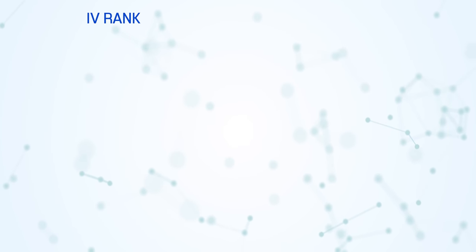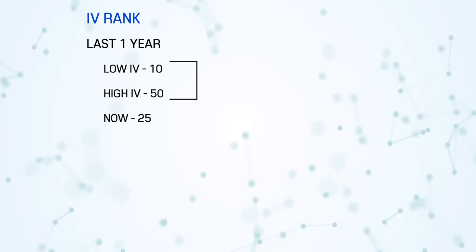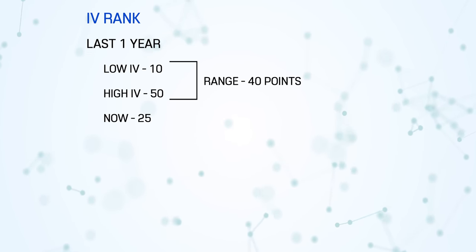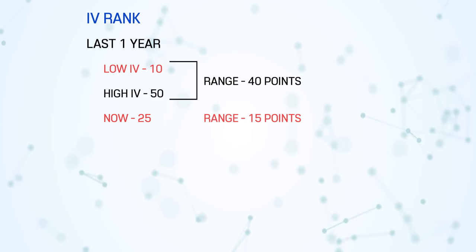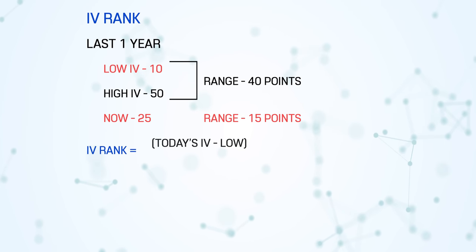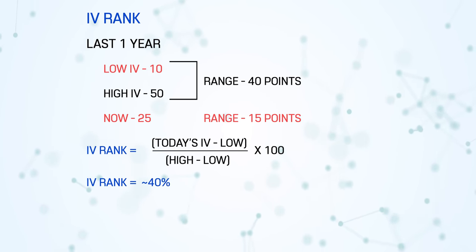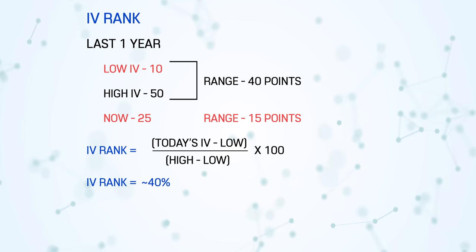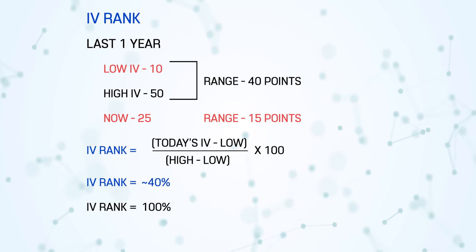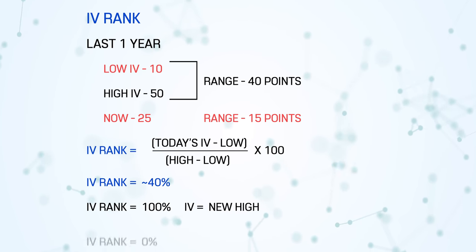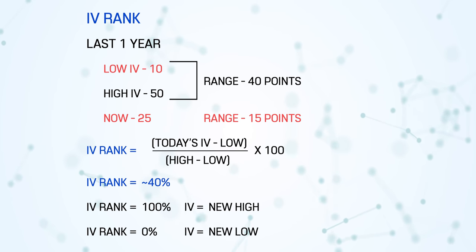For that, some websites show something called IV Rank and IV Percentile. What is IV Rank? Let us say for the last one year, the lowest IV is 10, the highest IV is 50, and now the IV is 25. The range is 40 points. Now it is 25, which means 15 points away from the lowest IV. As a percentage of the 40-point range, that is about 40%. So we say IV Rank is 40%, meaning within the last one year's range from the lowest point, we are currently 40% higher. If IV Rank is 100, today's IV is the highest in the last one year. If IV Rank is zero, today's IV is the lowest.